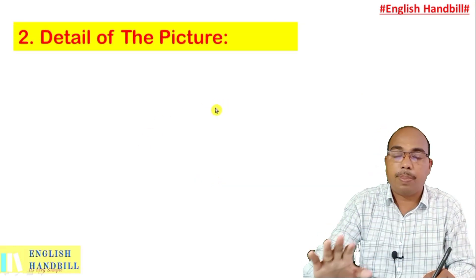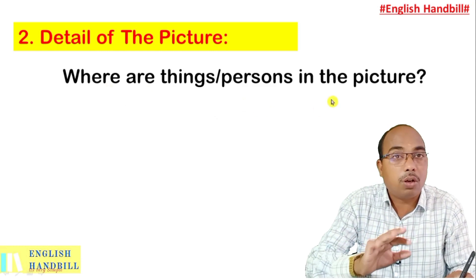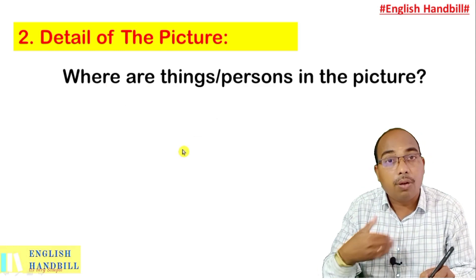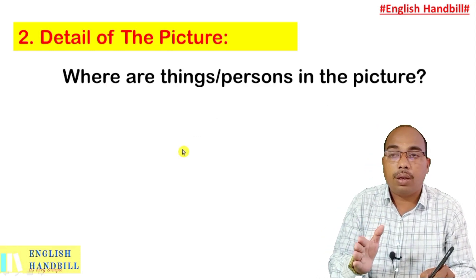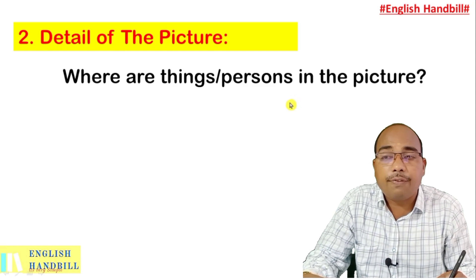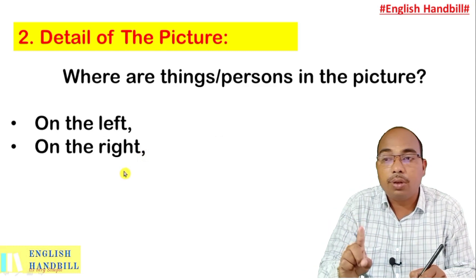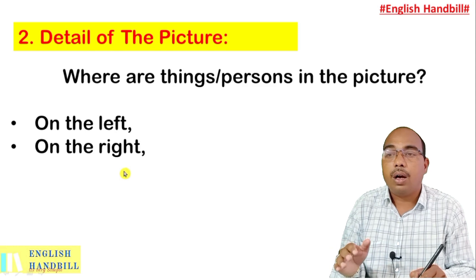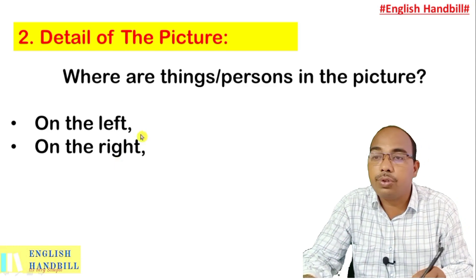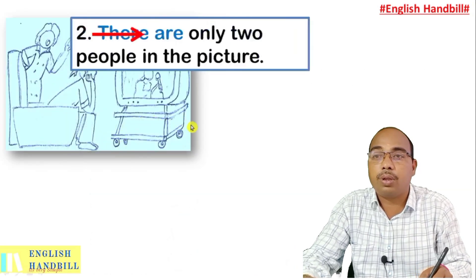Next, add details of the picture. What information can be found: where are the persons in the picture? You can use positional phrases. I will show you the important ones: on the left, on the right, in the middle, top, bottom — whatever you want to use. These are the phrases you can use to describe the picture.